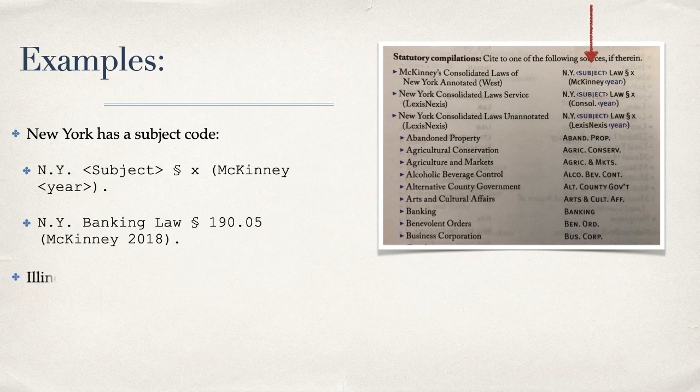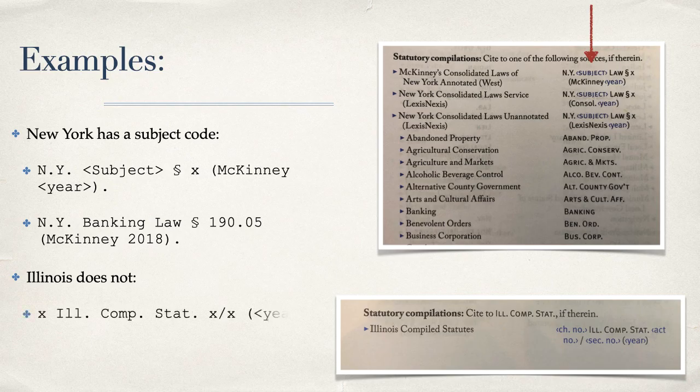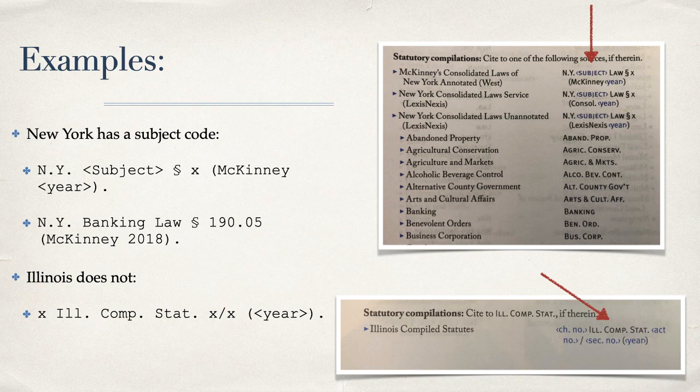In contrast to New York, let's take a look at Illinois, which does not incorporate subjects into the code cites. Instead, the Illinois statutes are organized by chapter number and require you to include the act number and section number surrounding the abbreviation for the code.